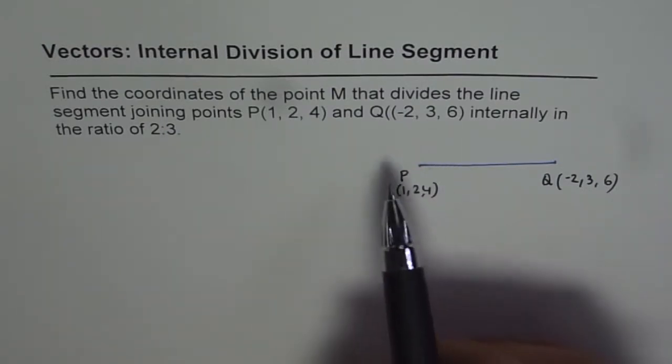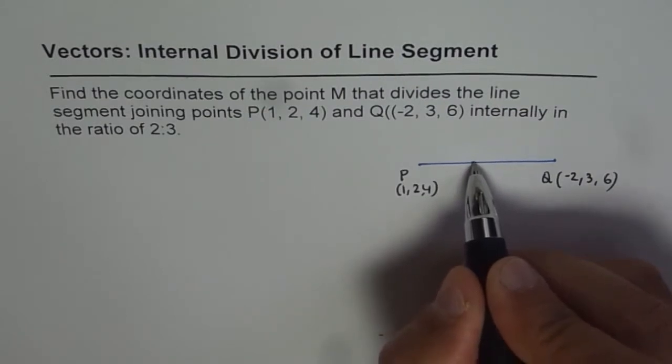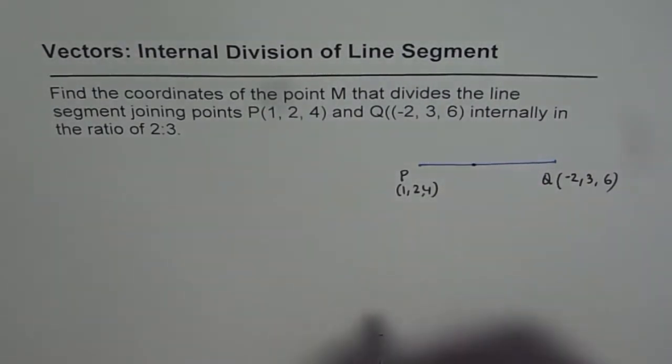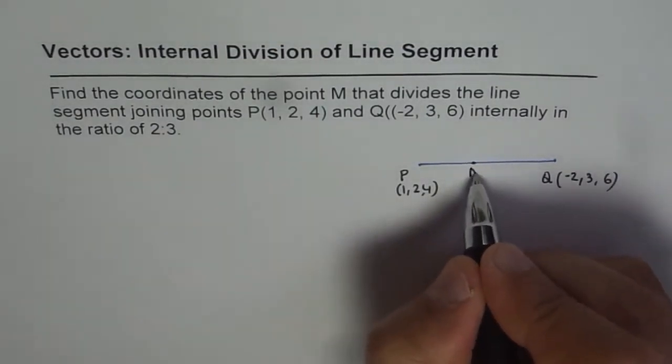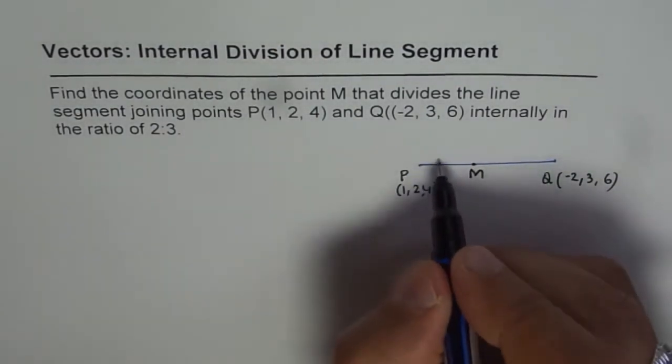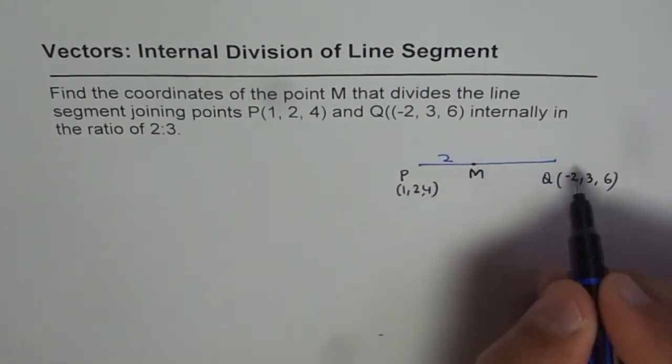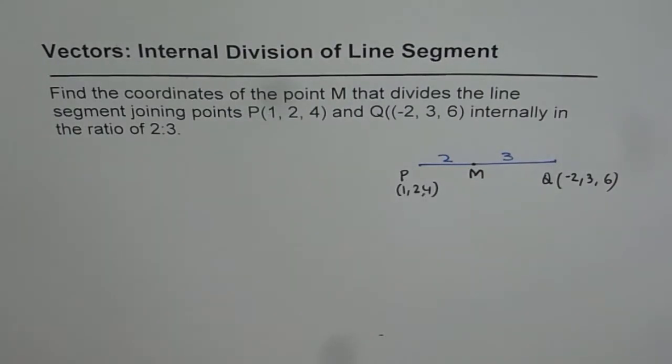Let us assume that point M is somewhere in between so that it divides the line PQ in the ratio of 2:3. That means if that is my point M, then PM is 2 and MQ is 3.